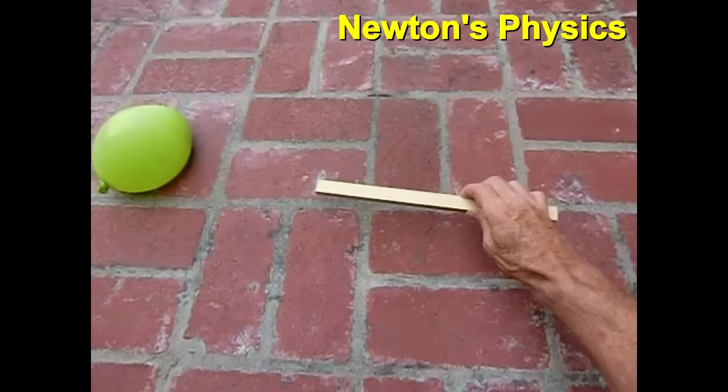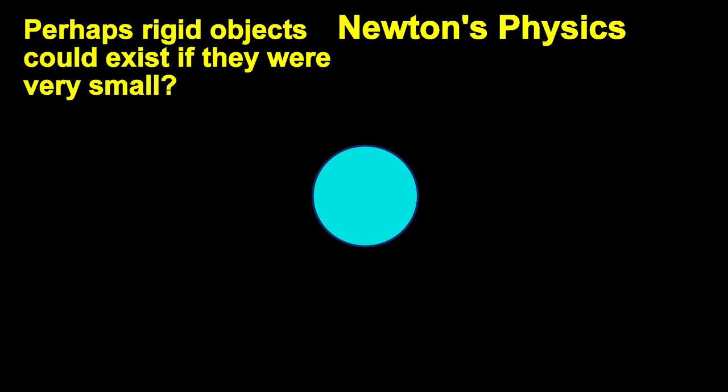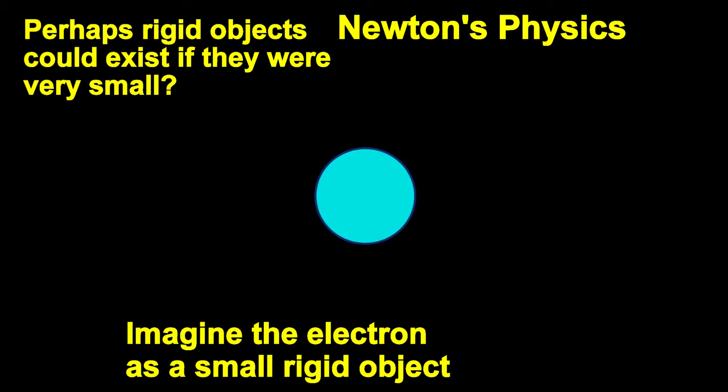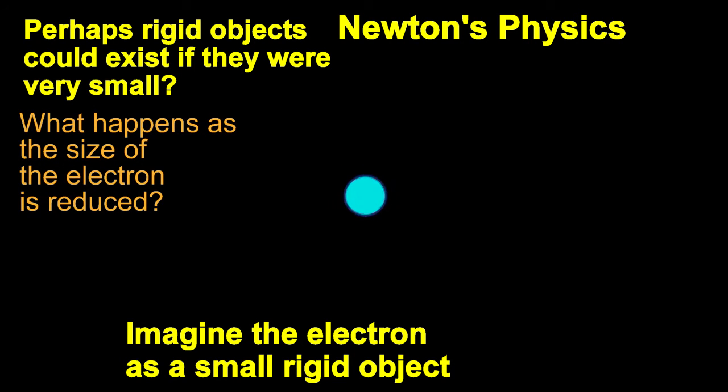But wait, you say. Perhaps rigid objects could exist if they were just very, very small. That idea was investigated in the early 1900s when the electron was discovered.